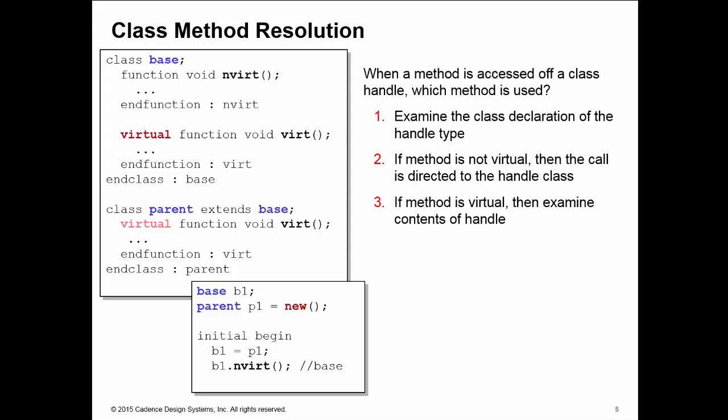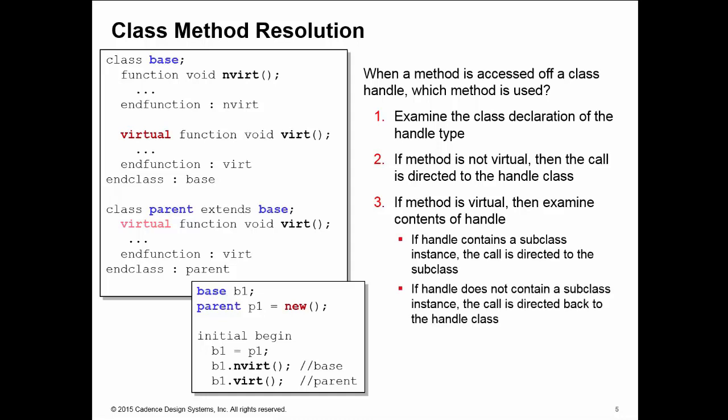If, however, we get to the handle class and find that the method is virtual, then we go back and look at the contents of the handle. If the handle contains a subclass instance, we direct the implementation to the subclass type. So when I call b1.invert and find the function is virtual, I look back at the call, see that b1 contains a pointer to a parent instance, and go to the parent class to execute that implementation. If the handle doesn't contain a subclass instance — if there's actually a base class instance in b1 — then we direct the call back to the base class, but we did look at the contents of the handle to determine that.